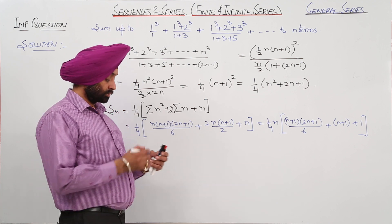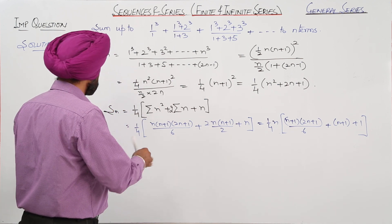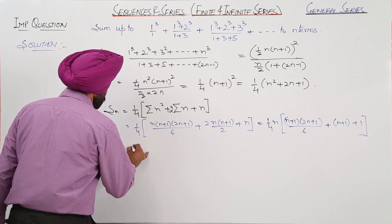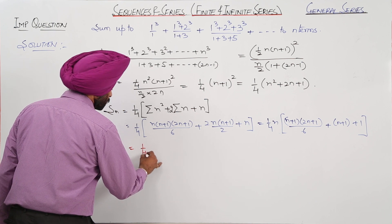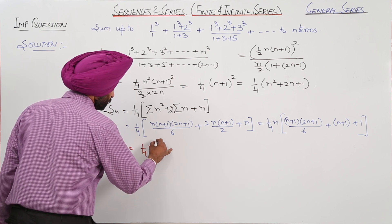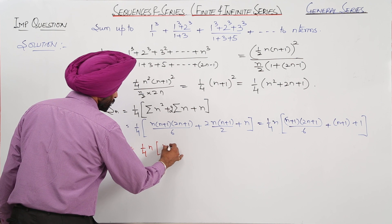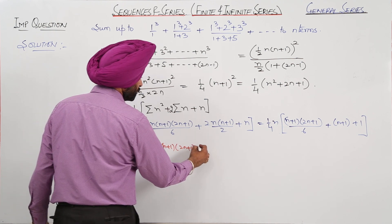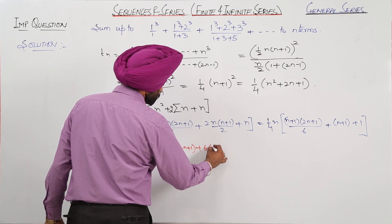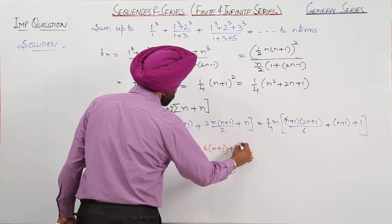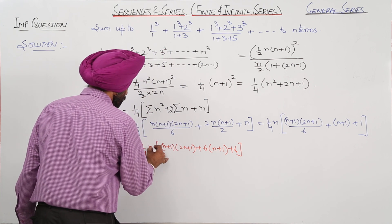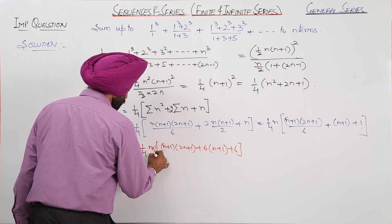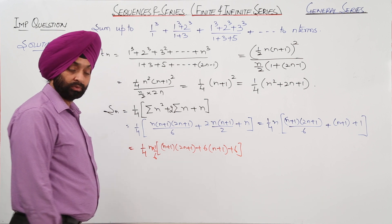This 2 and 2 cancels. Now this becomes 1/4 n, (n+1)(2n+1) plus 6(n+1) plus 6 times 1/6.